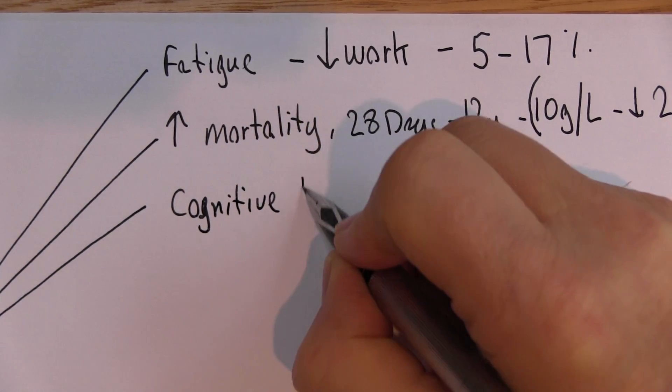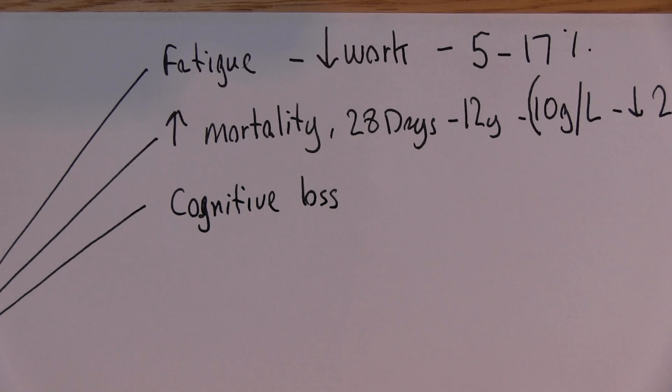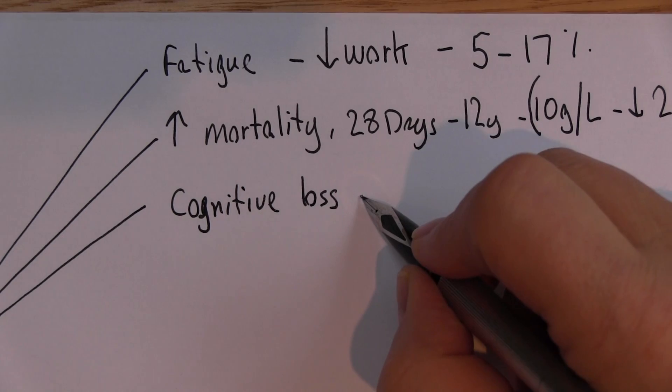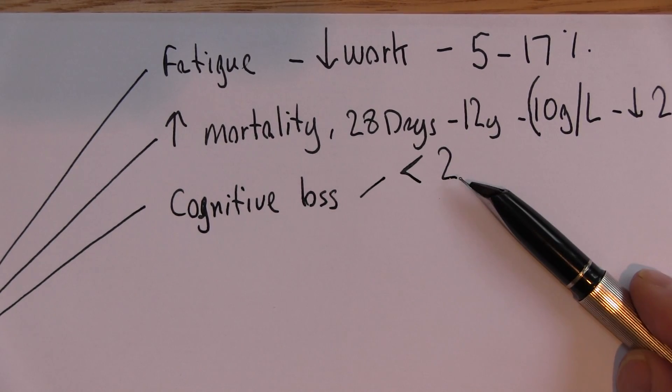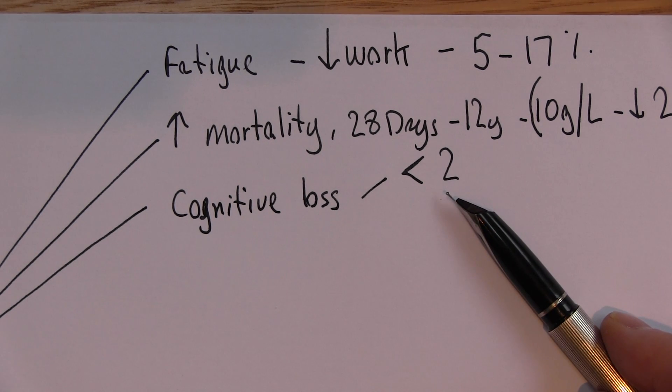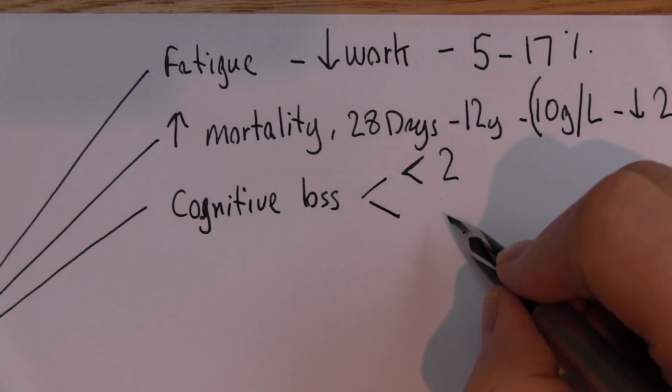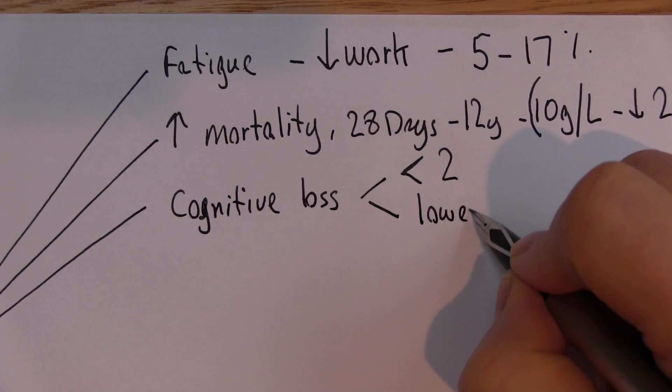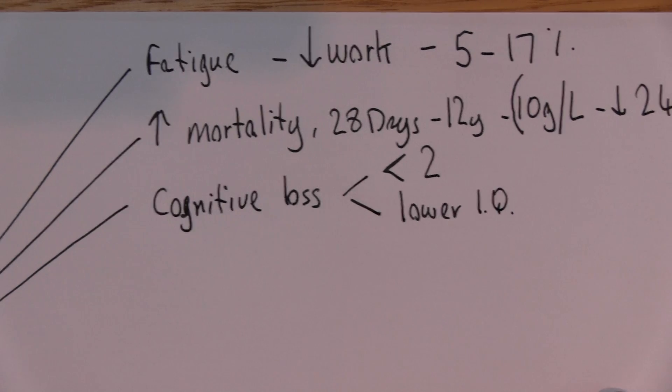Cognitive loss - the ability to think is going to be reduced. And in children less than two, this will be permanent. They will have a cognitive deficiency for the rest of their life if they're anemic up to the age of two.